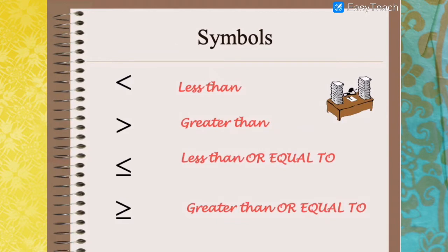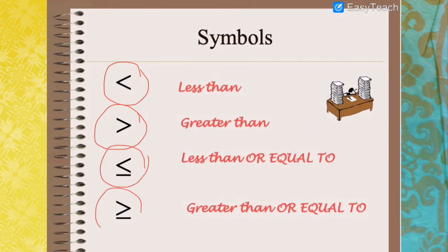The symbols we use for inequality include less than, greater than, less than or equal to, and greater than or equal to. It is read from left to right as we normally read. So for example, 4 is less than 8.